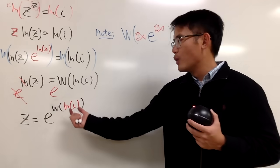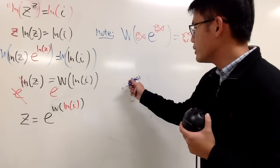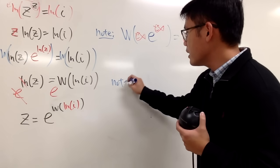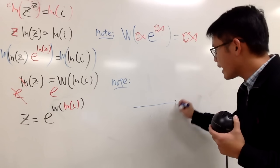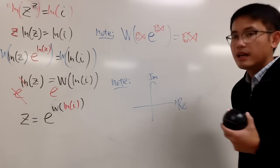Now we just have to answer what ln i is. And let's do it on the side. What we need to do is, we have to look at the complex plane. So let me draw it for you guys. Here we have the real axis, and here we have the imaginary axis.